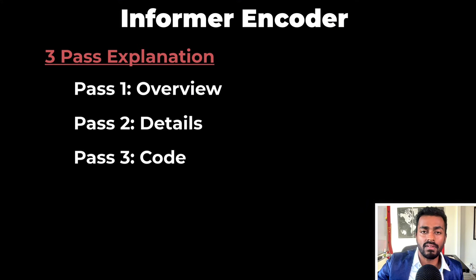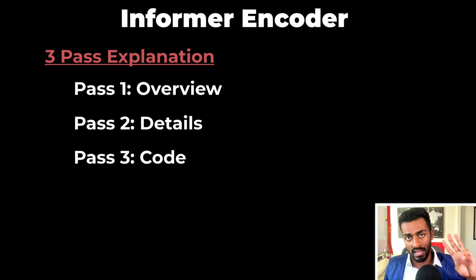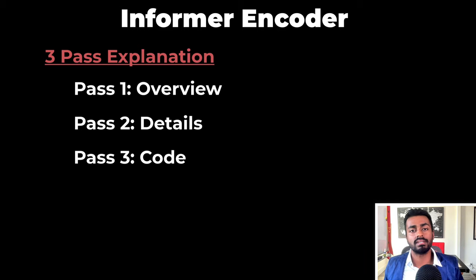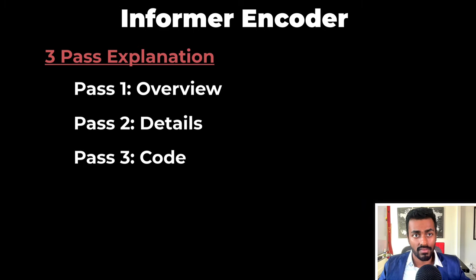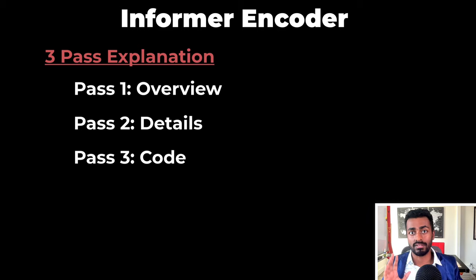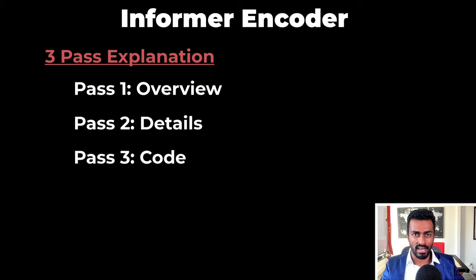This video is going to be divided into three main passes. In pass one, we will discuss the informer and the informer encoder at a very high level. Pass two, we're going to dive into some more encoder details. And then pass three, we'll actually take a look at some open source informer code to see how the pieces go together. It's going to be fun, so let's get to it.